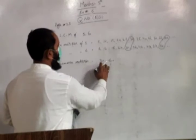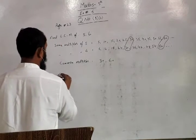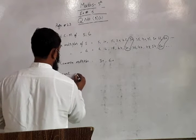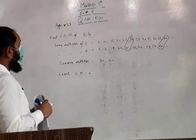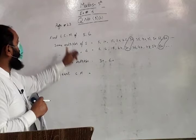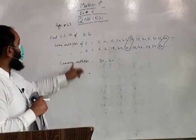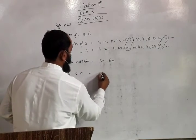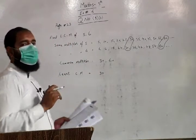Ab ye jo hum ne common multiples liye hain, is mein se least common multiple jo hai wo hum yahan mention karenge. Least yani sab se chhota common multiple. Least common multiple, CM is equal. LCM bhi isi lafz se, least common multiple ka hi. Ye abbreviation diya gaya hai: L for least, C for common, and M for multiple. Least common multiple, yani sab se chhota common multiple hua hamare paas 30 hai. Isi ko hum LCM ka naam dete hain.